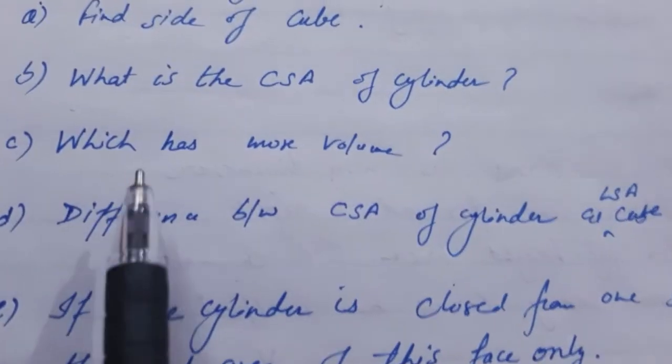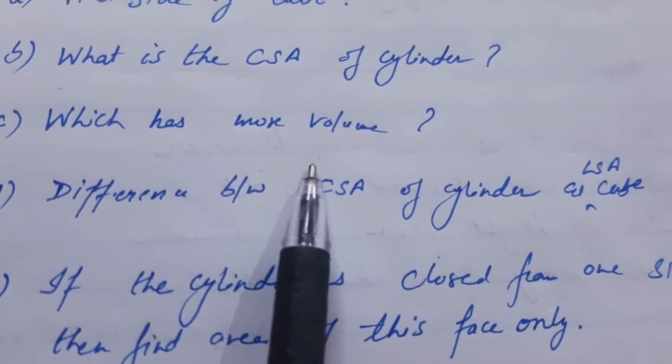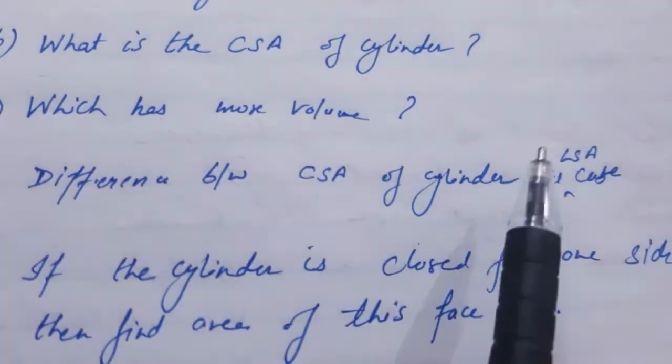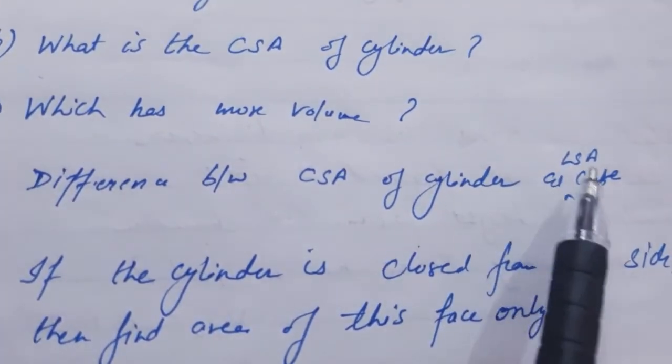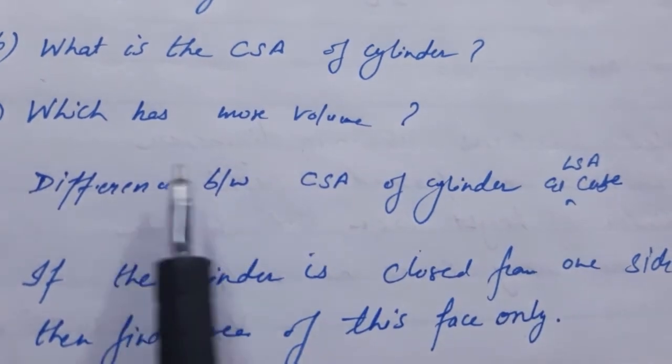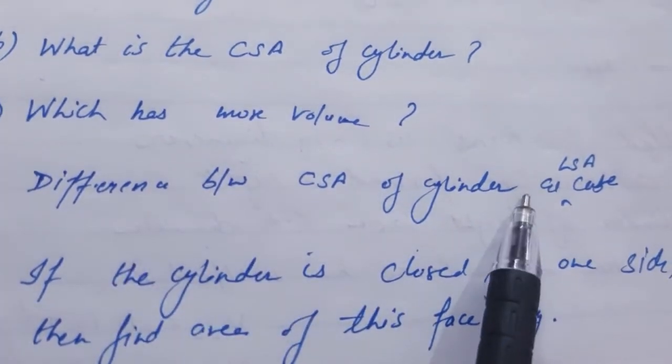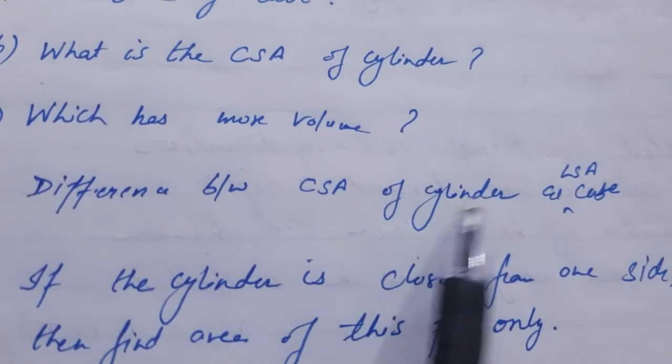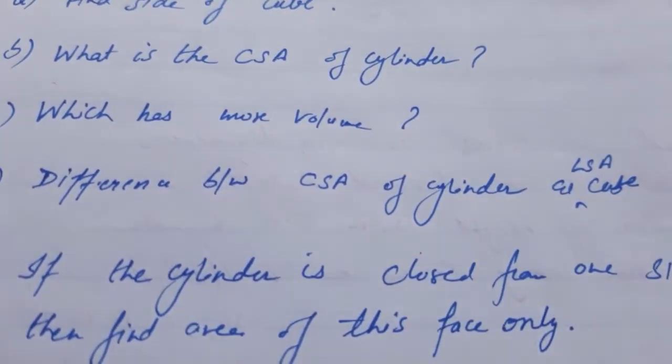Part D: Find the difference between the CSA of cylinder and lateral surface area of cube. We have to find the difference between the curved surface area of cylinder and lateral surface area of cube.